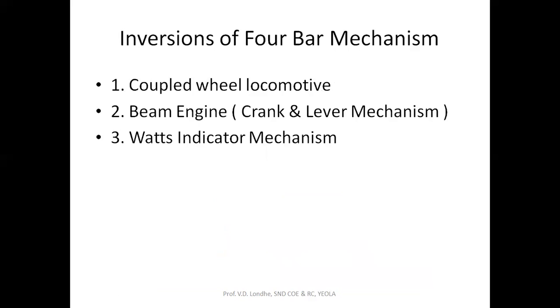The inversions of the 4-bar chain mechanism are: first, the coupled wheel locomotive; second, the beam engine, also called the crank and lever mechanism; and third, the Watt's indicator mechanism.